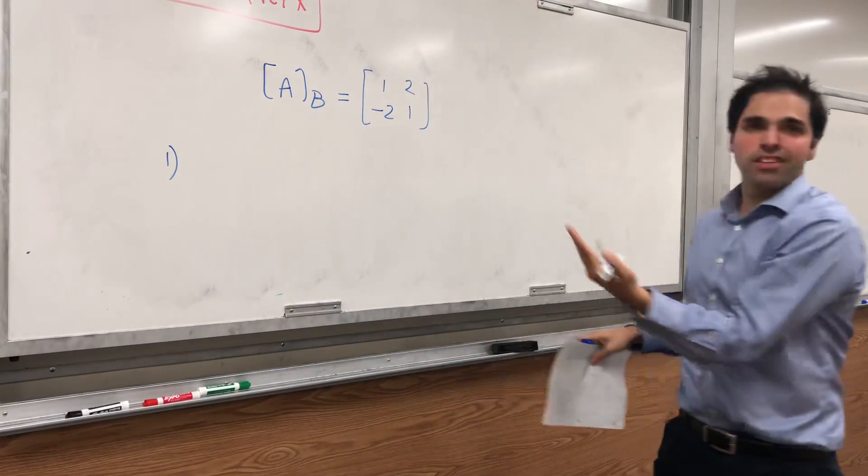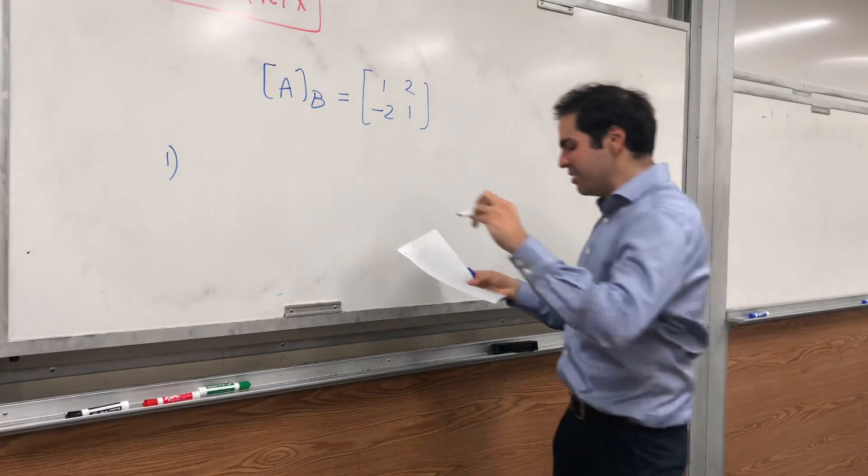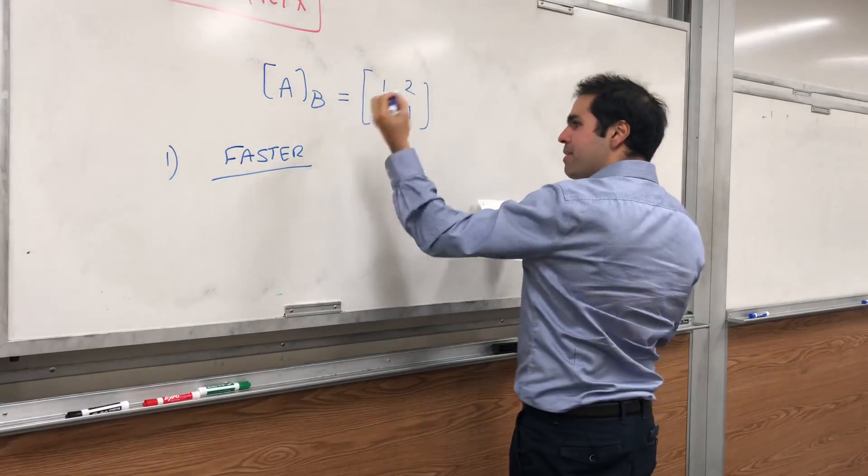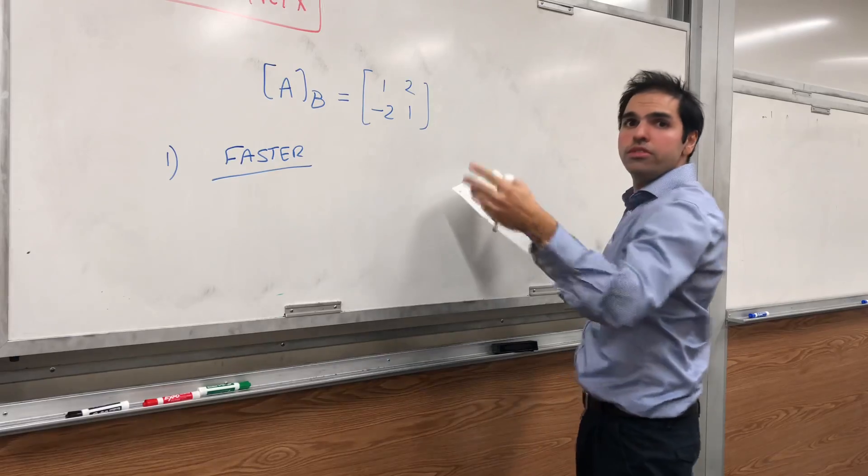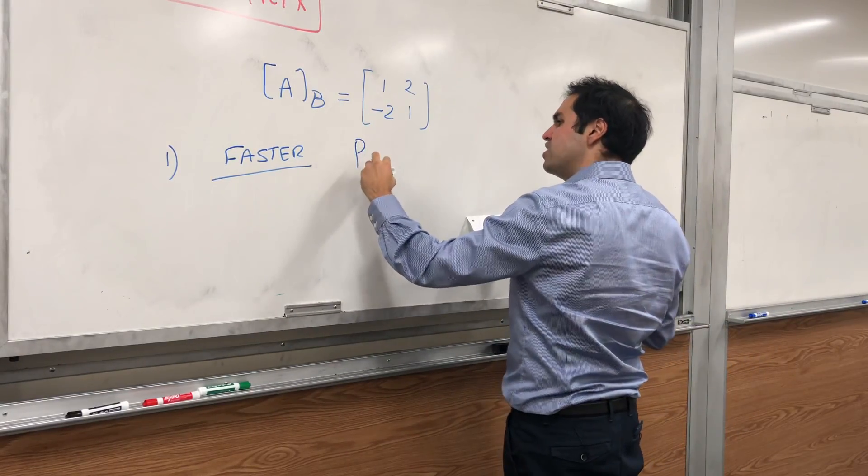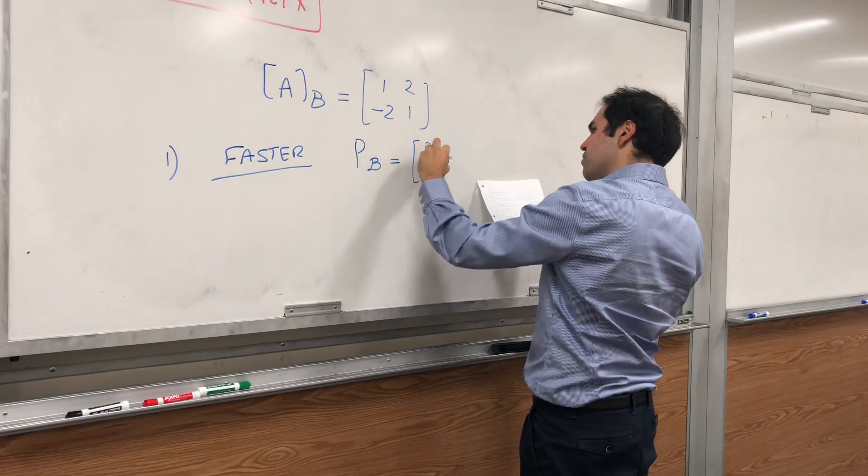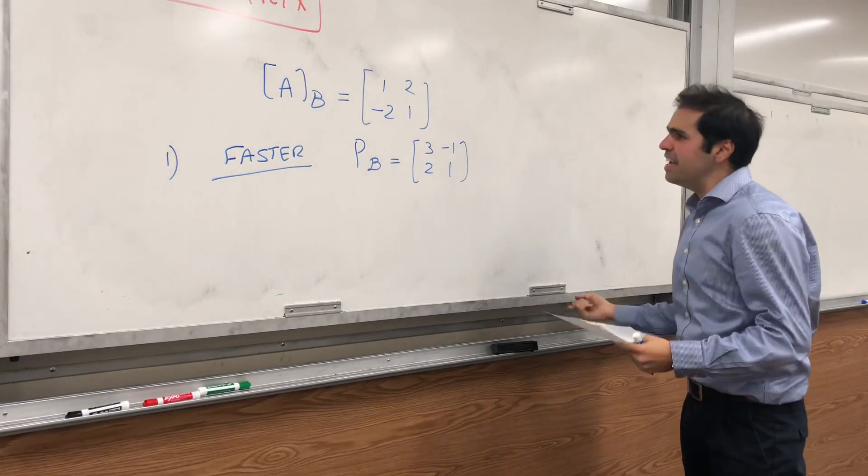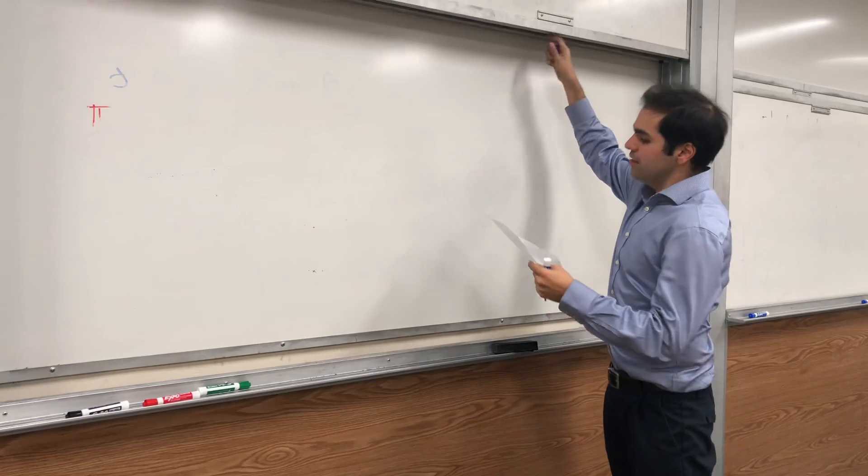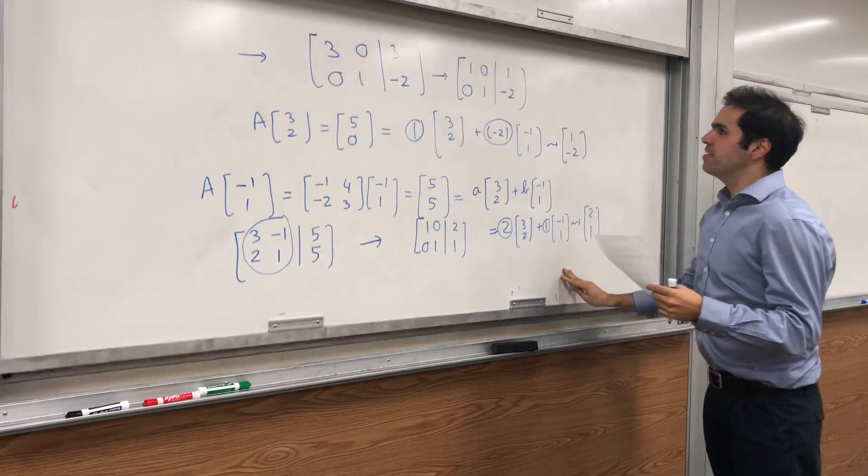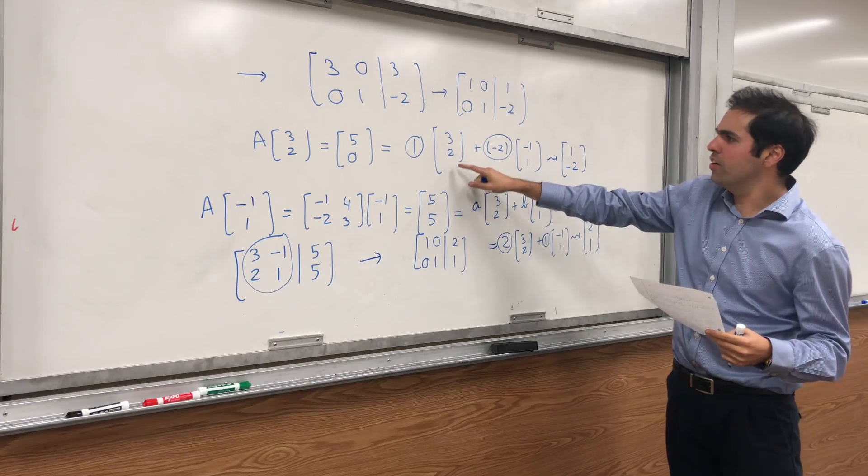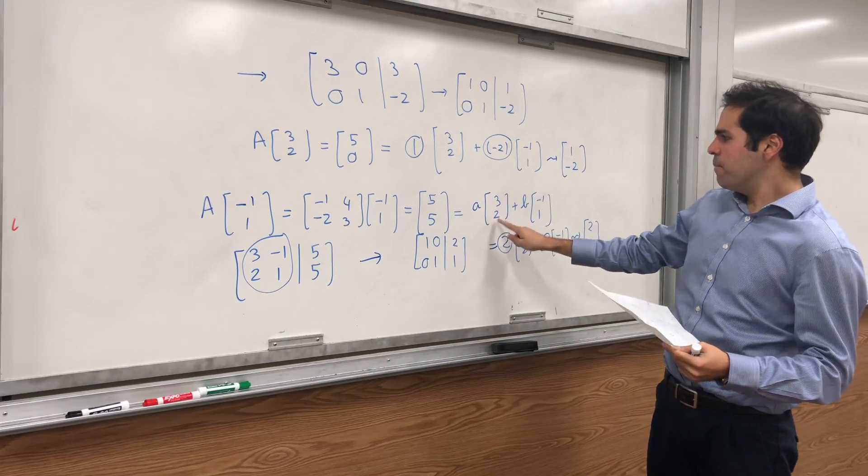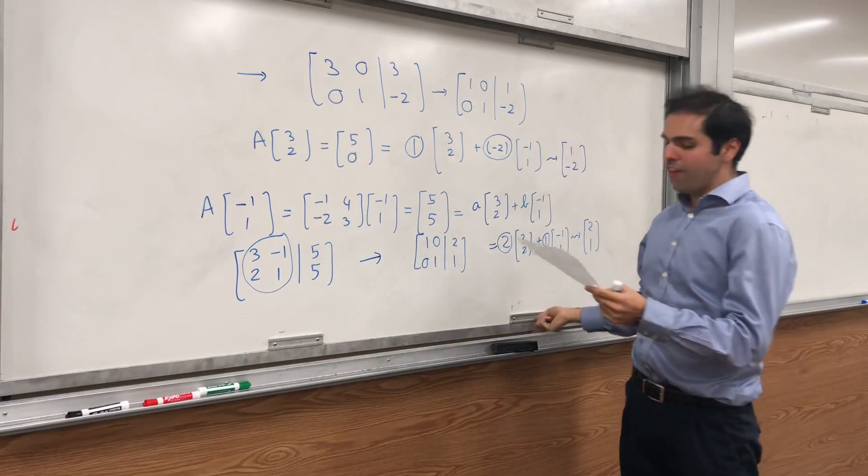First of all, here we did it in a slow way. There's actually a much faster way to do this. So remember, if you put the vectors in B together, you get what's called the change of coordinates matrix P_B, which is [3, -1; 2, 1]. And notice what we really did in this problem. For example here, we tried to solve P_B of what and what gives you (5, 0). Similarly here, P_B of what and what gives you (5, 5).